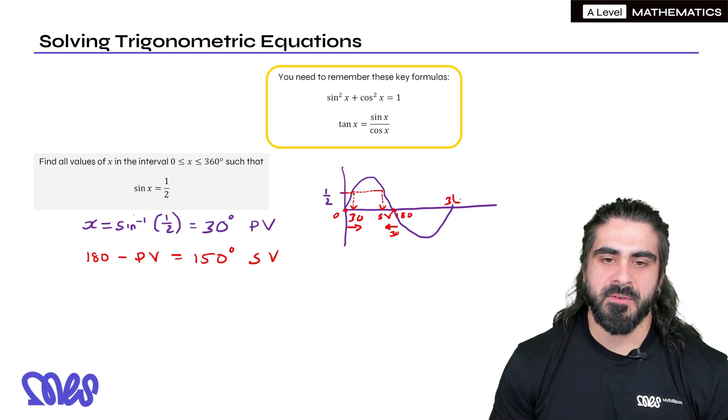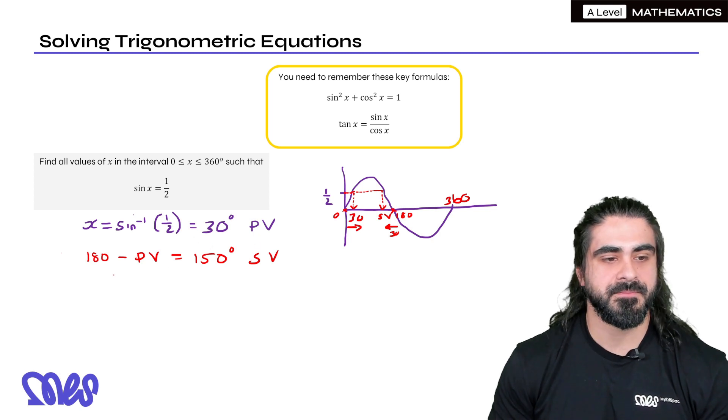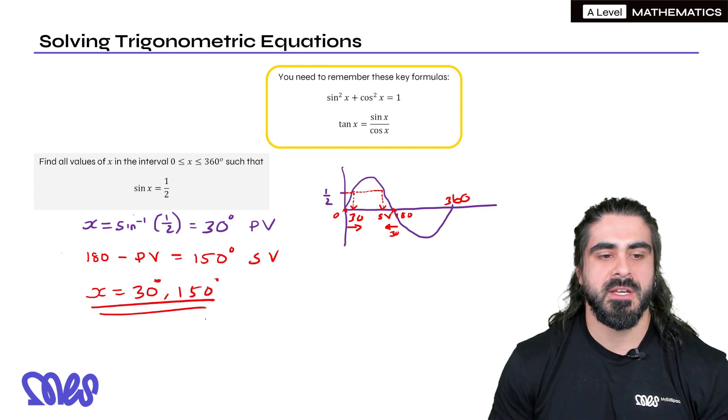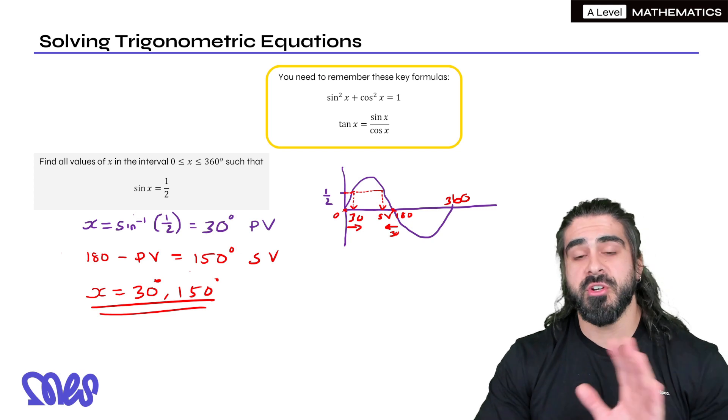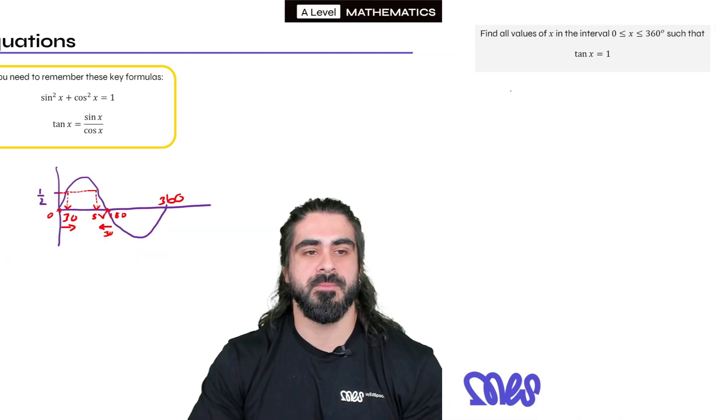And we see between 0 and 360 from our graph, there's only two values, 30 and 150. I'm going to discuss a little bit later how we find other values if the range was a little bit bigger. So in a nutshell, for sine, we do 180 minus the primary value, which means you don't need to draw the graph anymore. I'm showing you the graph once so that you see where it comes from.